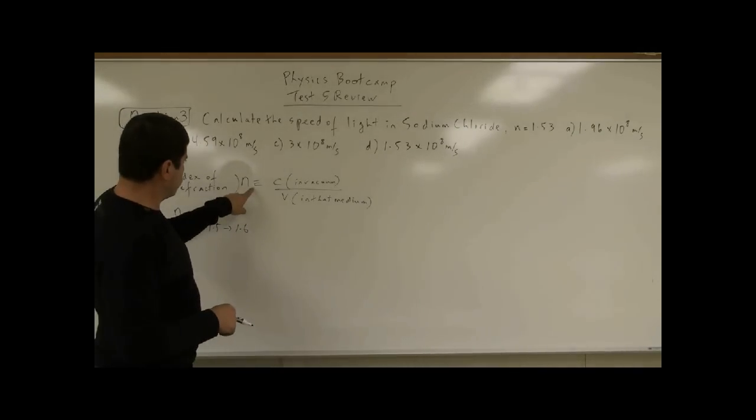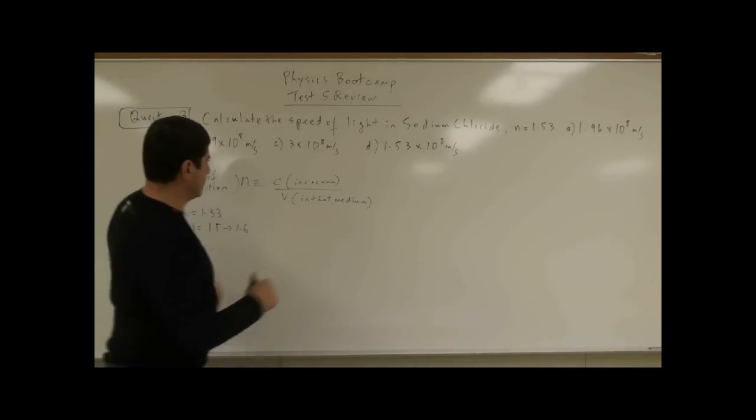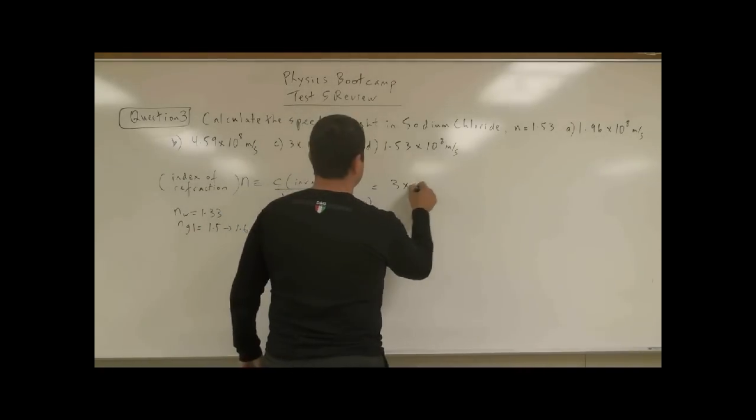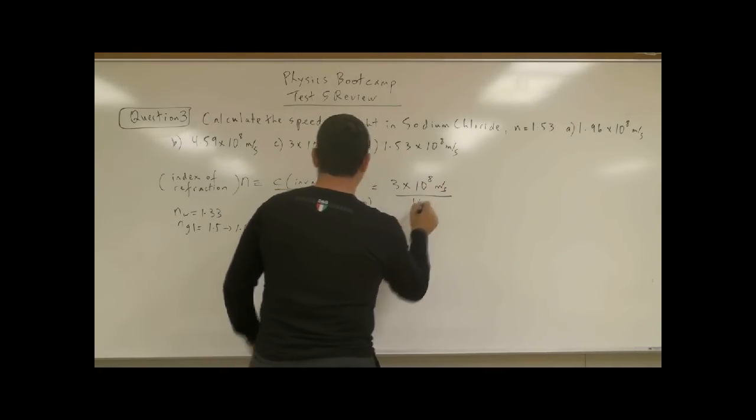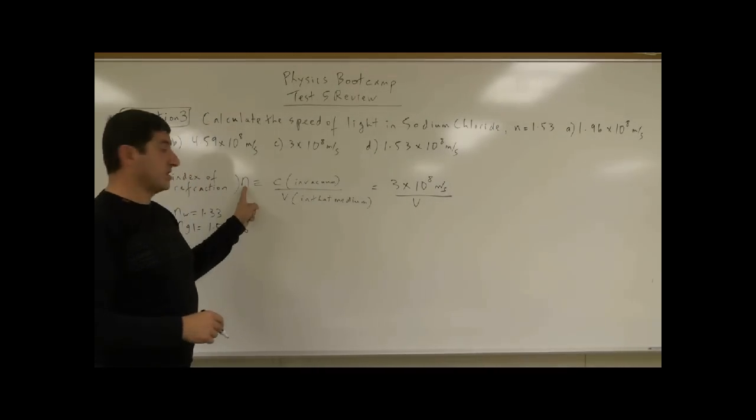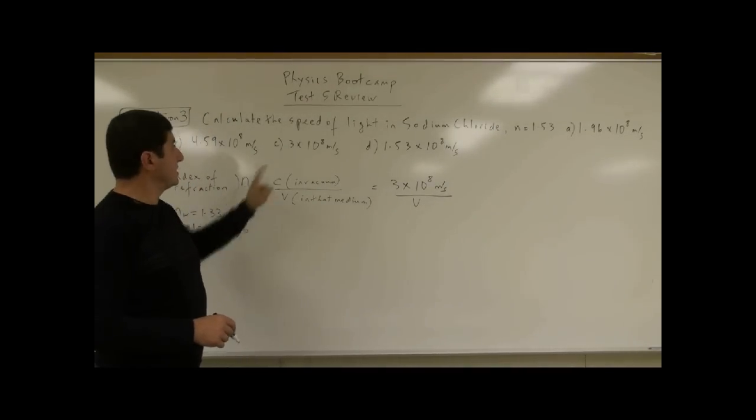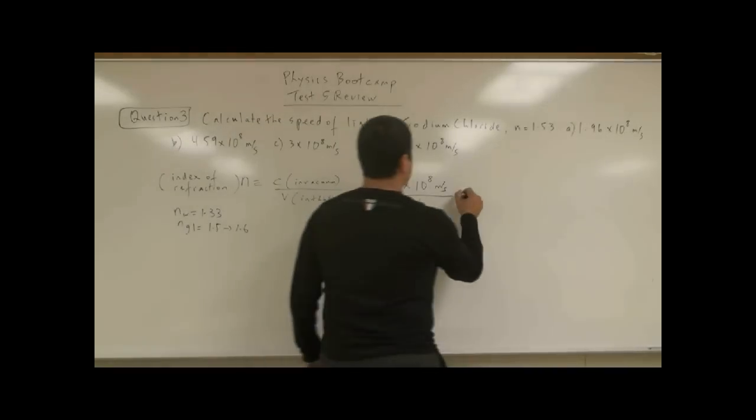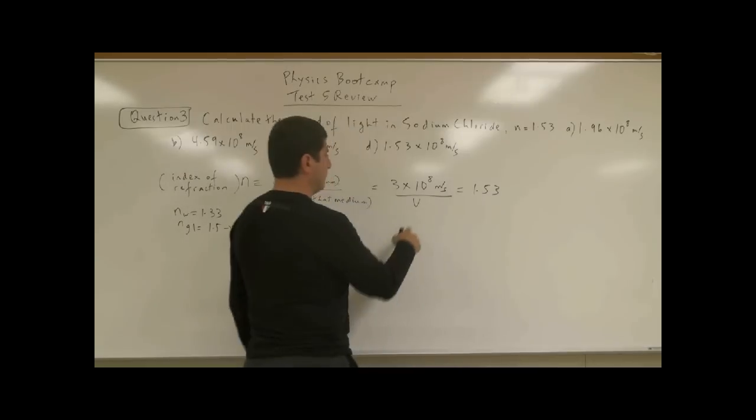What happens is that the speed of light in vacuum is 3 times 10 to the 8 meters per second. And the velocity of light in that medium, we don't know. But once you know the index of refraction of the medium, in this case it's equal to 1.53, then what does that mean?